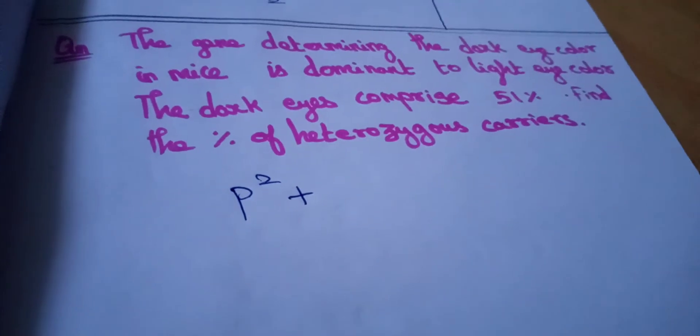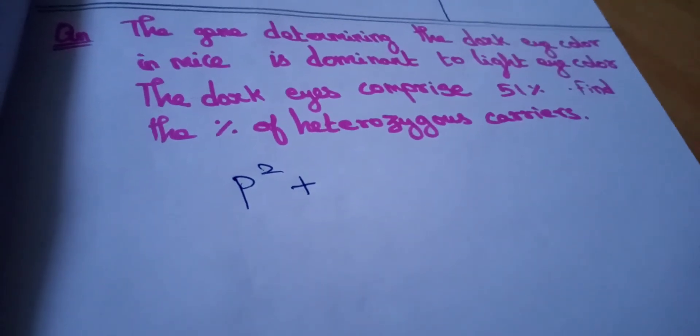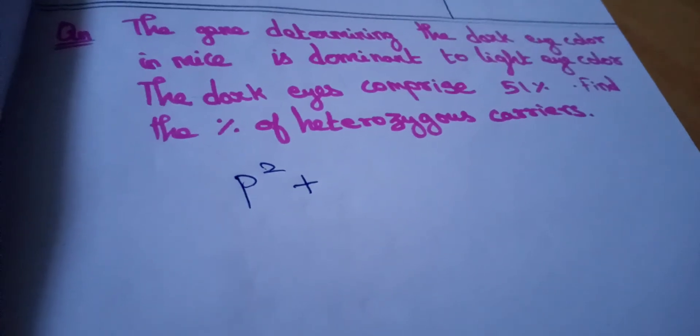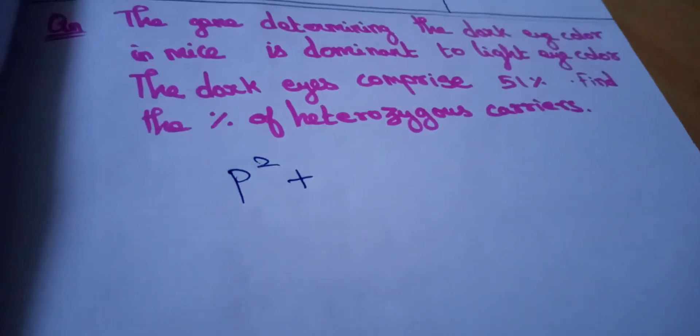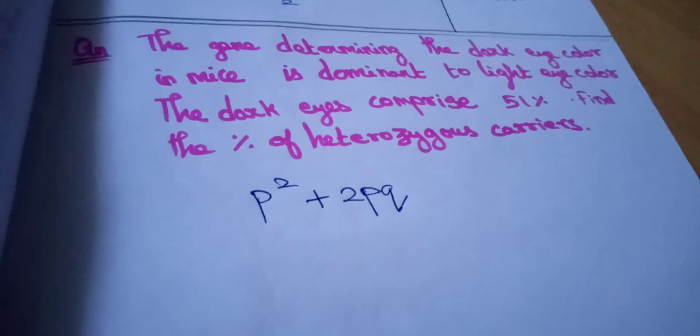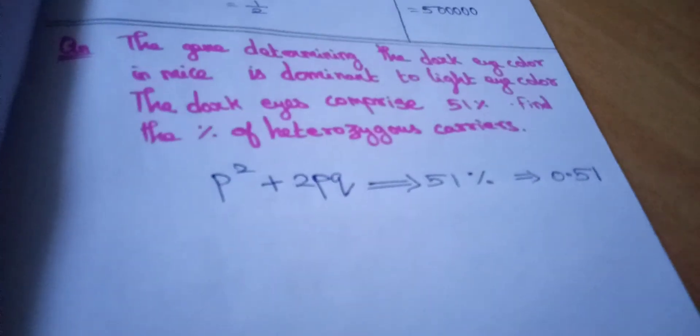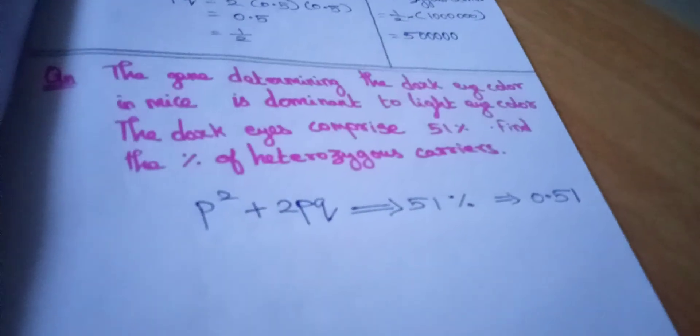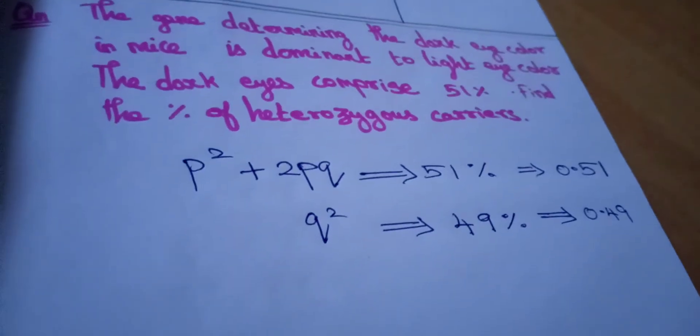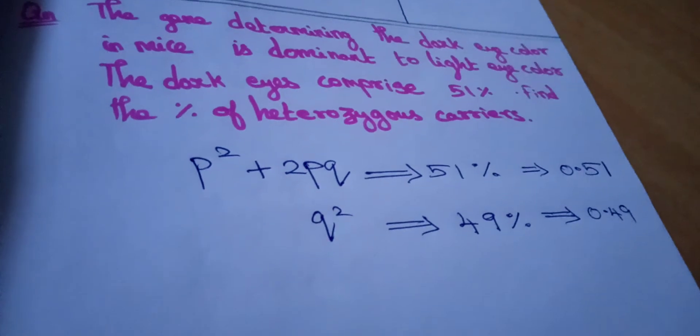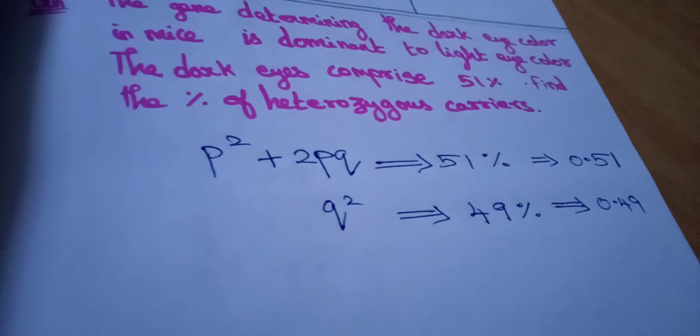Because they too have dark eyes. This is the point where we make mistakes. We will only take P square, but in this case, both the homozygous and the heterozygous we should consider because both are dark eyed. So P² + 2PQ which is 51%. See here, if P² + 2PQ are dark eyed at 51%, the remaining might be the light eyed ones. See here, they are the balance 49%, which is 0.49. If Q² is 0.49, Q is 0.7.